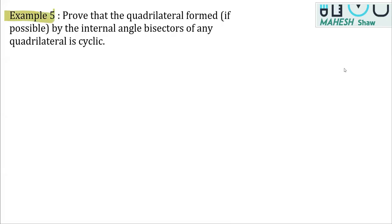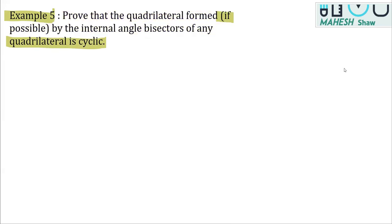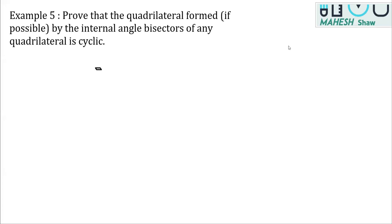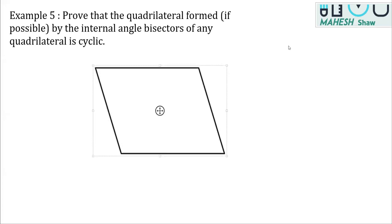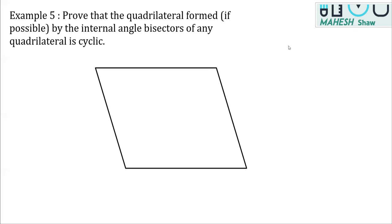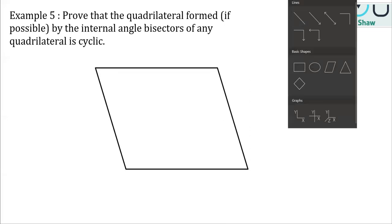This is example number five. The question says: prove that the quadrilateral formed, if possible, by the internal bisectors of any quadrilateral is cyclic. So we are given any quadrilateral, and I'm drawing the internal angle bisectors of this quadrilateral.